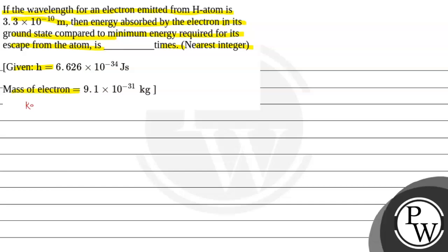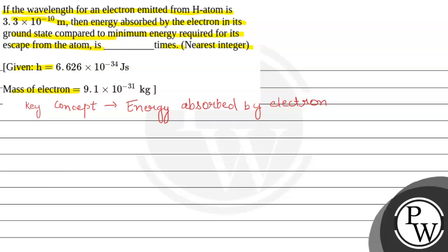First of all, we will see the key concept. The key concept is the total energy absorbed by the electron. Here we can write: energy absorbed by the electron. It is given that we have a wavelength striking for electron emission.